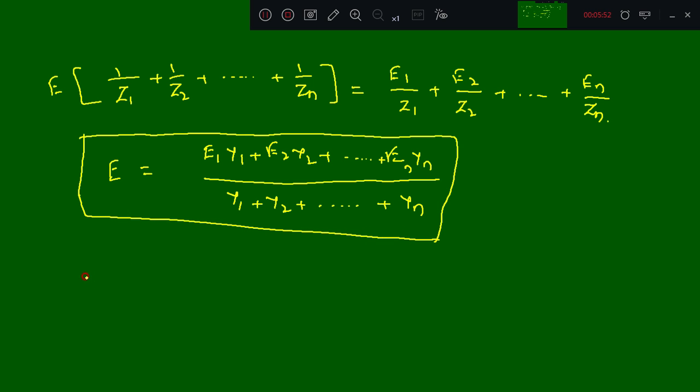What is Z? Z is nothing but 1 divided by Y. This is nothing but 1 divided by Y1 plus Y2 plus till Yn.